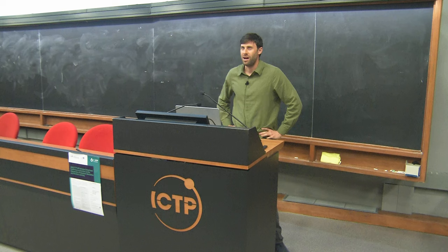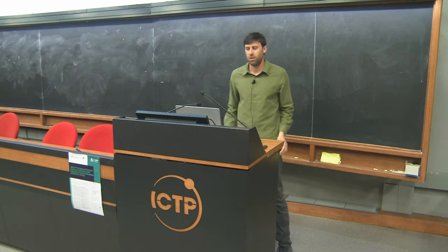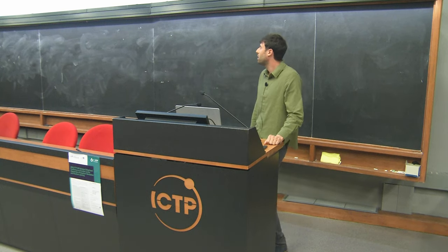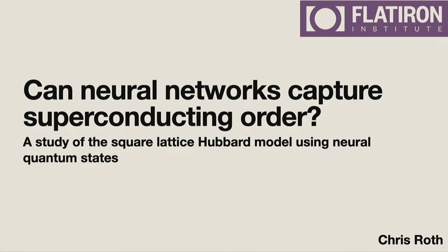I'm actually not going to be talking about spin liquids. I'll be talking about superconductivity. I'm going to ask the question: can neural networks capture superconducting order without really any information that the state is going to be superconducting? We're going to try to start from a bare-bones neural network ansatz and see if we can stabilize superconductivity of various types.